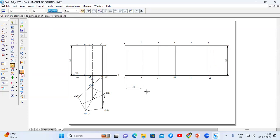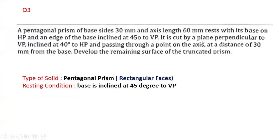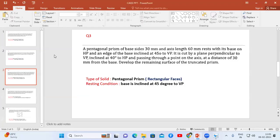This is the solution for the pentagonal prism without considering the cut section. But in this problem the cut section condition is given: it is cut by a plane perpendicular to VP, inclined at 40 degrees to HP, passing through the point on the axis at a distance of 30mm from the base.